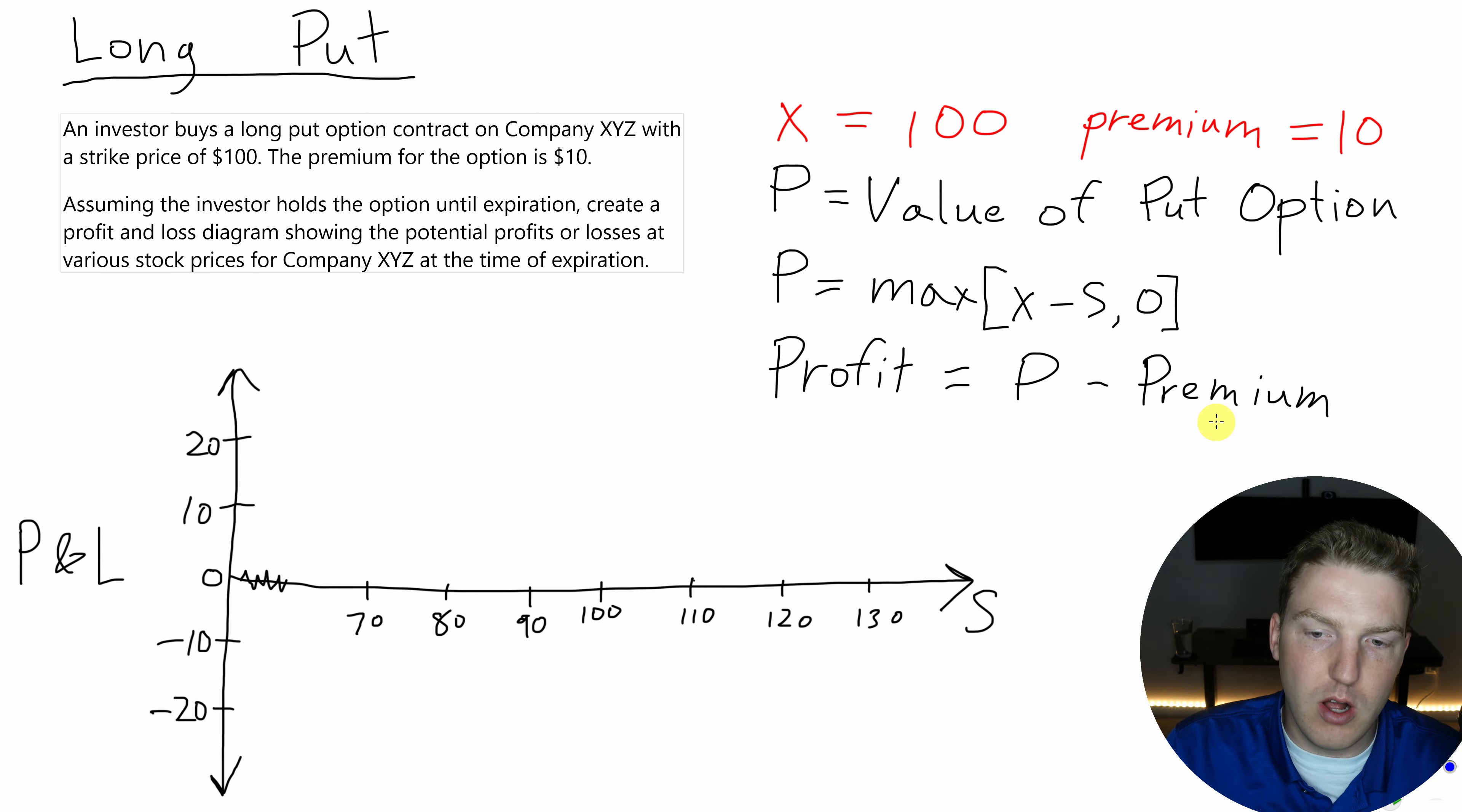So let's go ahead and draw this payoff diagram. If I bought this contract for $10, I'm going to be down $10. So if this price is anywhere $100 or less, I'm going to be down $10 that I paid because I cannot exercise it. Now, once it gets to $100, my line starts ticking up like that. And then I hit my breakeven point of 90. That should be a straight line.